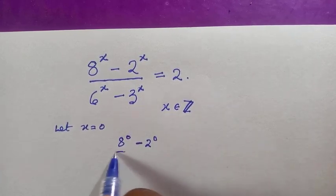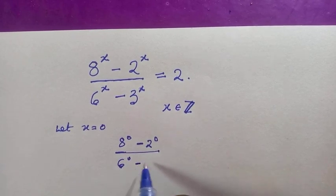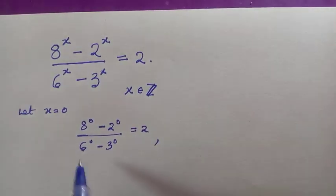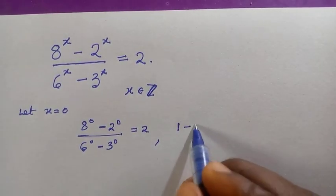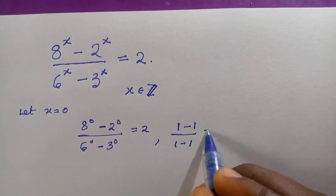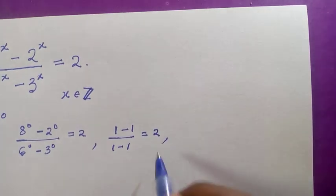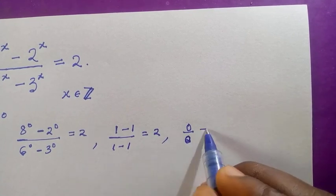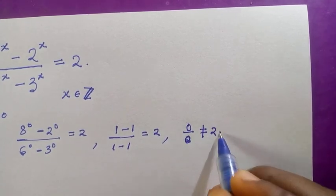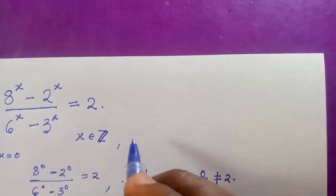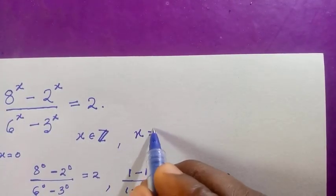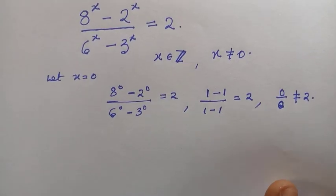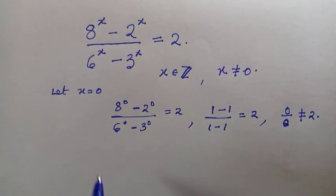Here we have 8 raised to the power 0 minus 2 raised to the power 0, divided by 6 raised to the power 0 minus 3 raised to the power 0, everything equals to 2. We know that 8 raised to the power 0 is 1, so this gives 1 minus 1 divided by 1 minus 1, which is 0 divided by 0, and this is not equal to 2. So the solution must not equal 0.